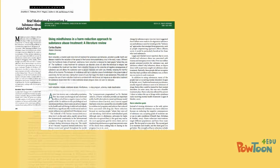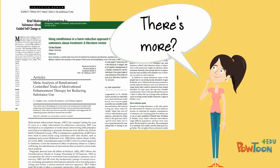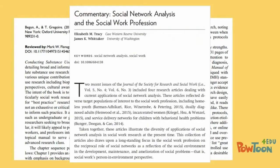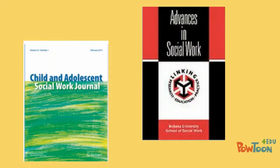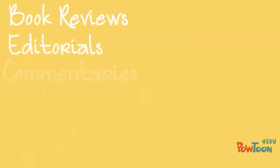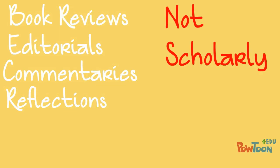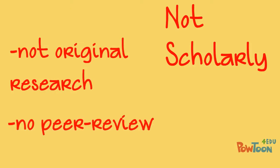Along with research articles and review articles, Anne learned that scholarly journals sometimes publish other types of articles, such as descriptions of recent books in the field, and commentaries or letters to the editor. Although published in scholarly journals, book reviews, editorials, commentaries, reflections, and other similar articles are not considered to be scholarly articles. These articles do not describe the results of an original research study, and they have not been through the peer review process.